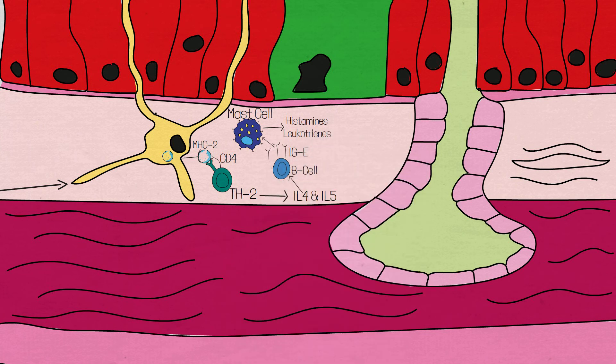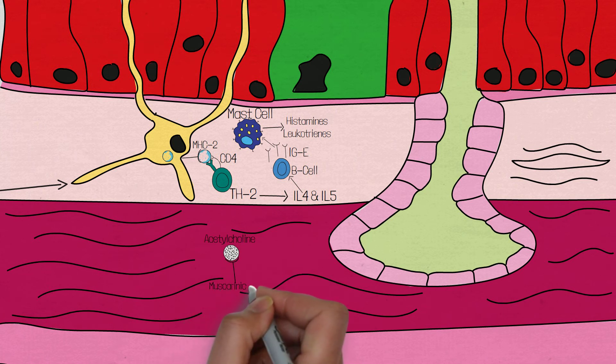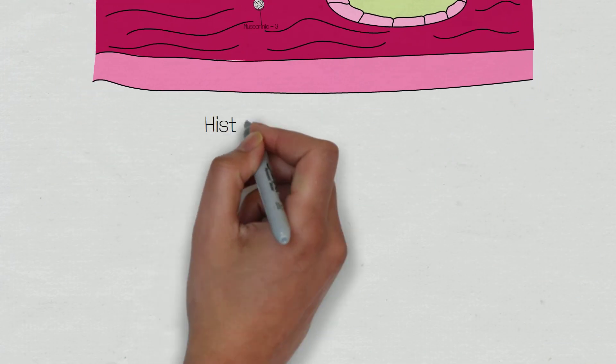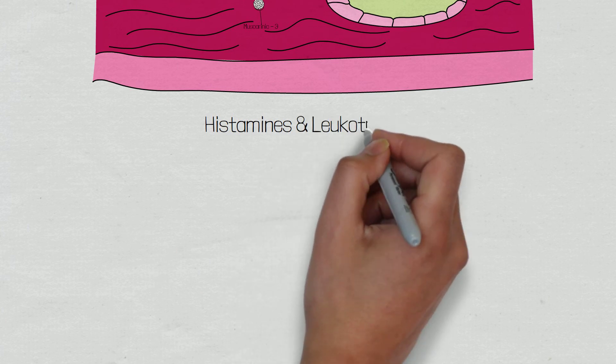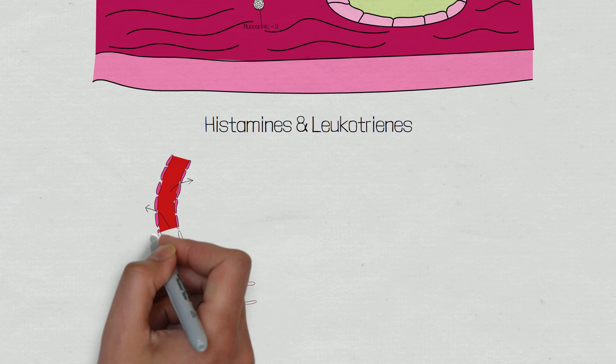Histamines stimulate the afferent vagus nerve, which in turn causes the efferent vagus nerve to release acetylcholine onto muscarinic 3 receptors within the bronchial smooth muscle, initiating contraction and therefore constriction. This is of important clinical context when we discuss treatment and management. Histamine also causes vasodilation and edema within the bronchial smooth muscle, increasing the level of bronchoconstriction.